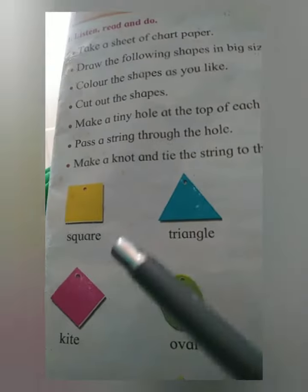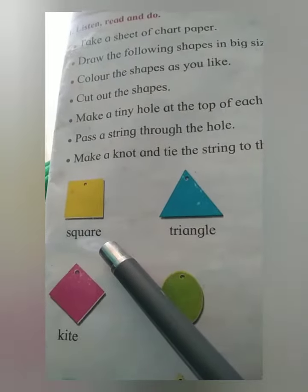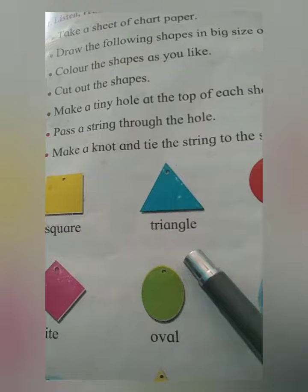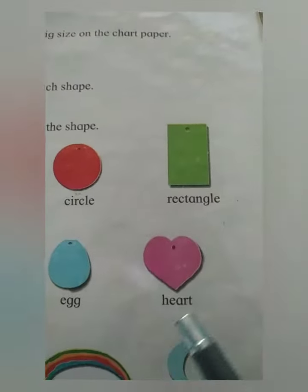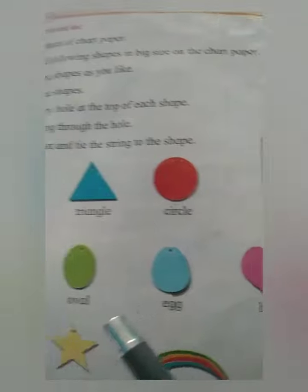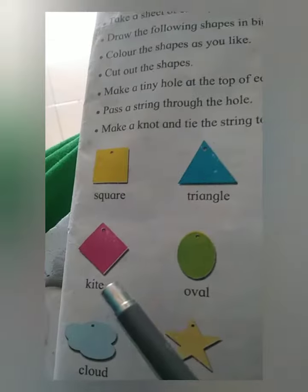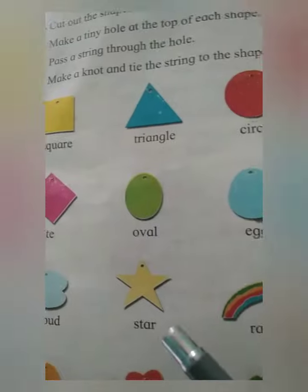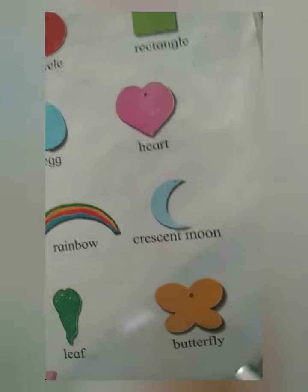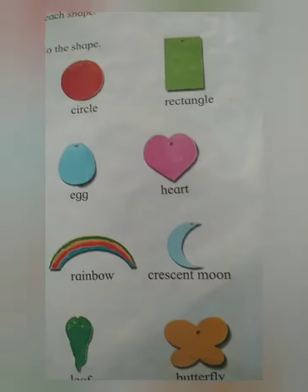Now look at the names of the shapes: square, triangle, circle, rectangle, heart, egg, oval, kite, cloud, star, rainbow, crescent moon, mango, flower, leaf, and butterfly.